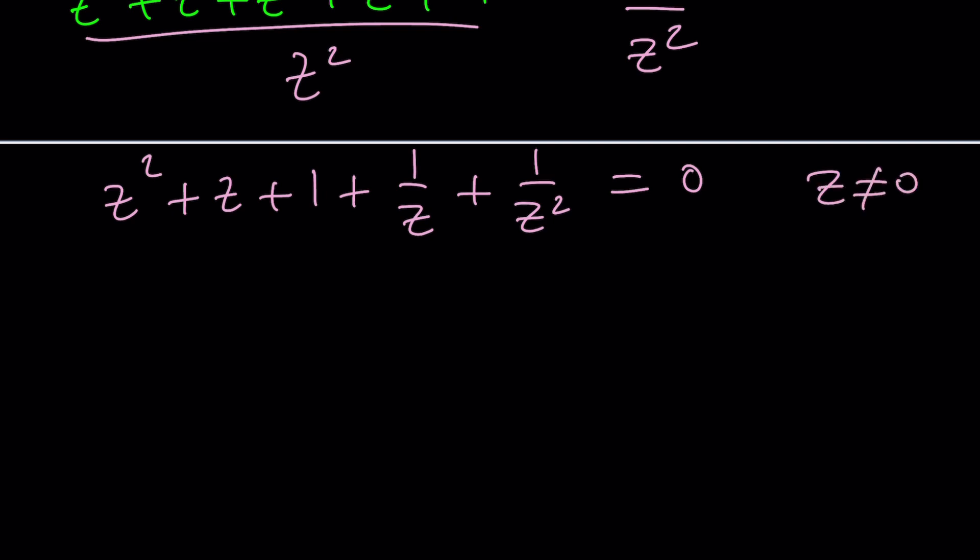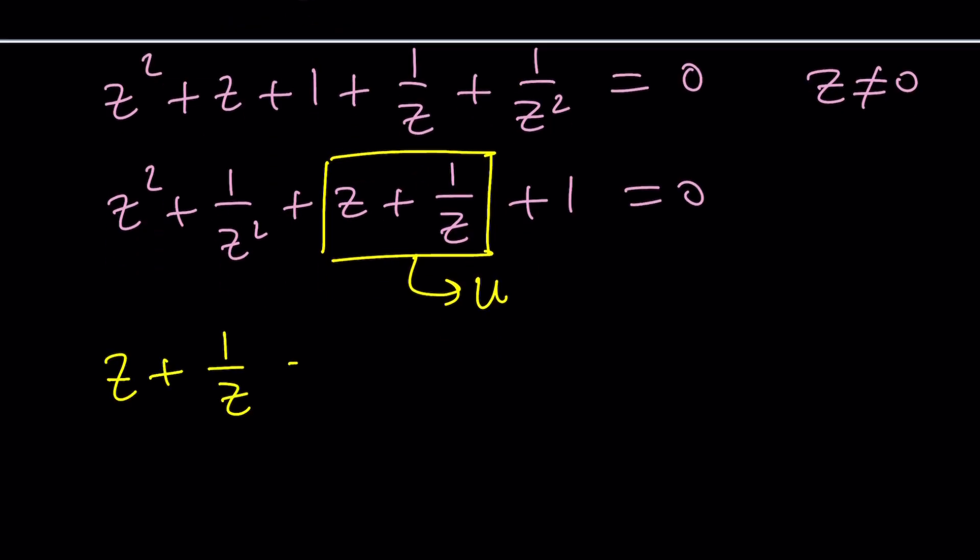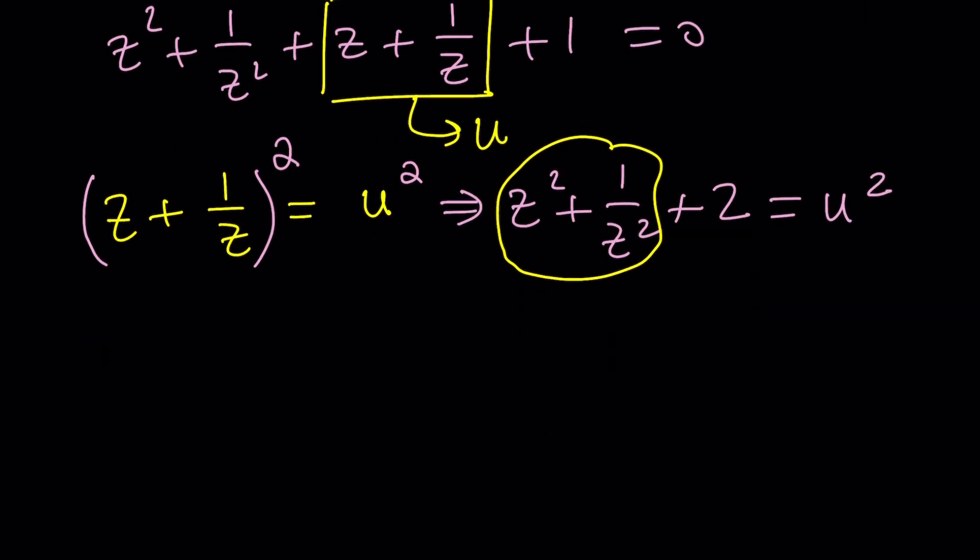Obviously z equals zero does not satisfy the original equation, so it's okay to divide by z squared. Every term is going to be divided, so we get z squared plus z plus one plus one over z plus one over z squared equals zero. We have an interesting case here because notice that z squared and one over z squared can be paired up, followed by z plus one over z, and we'll have plus one at the end. Why is this important?